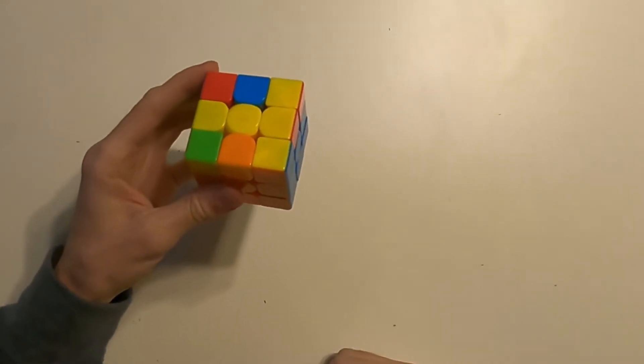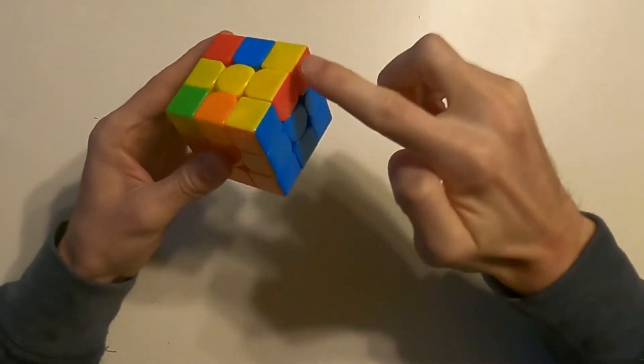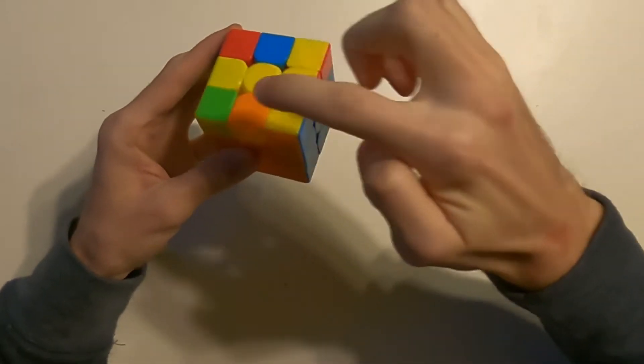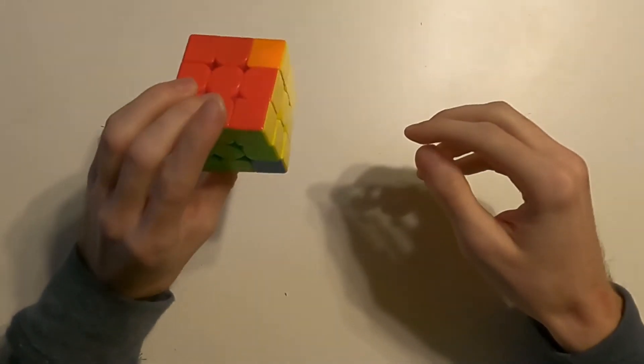So this is just the Sexy Sledge OLL. To recognize CP, we'll see that these two colors are the same and these two colors are opposite. If you just do the normal OLL, you'll get a DiagSwap PLL.